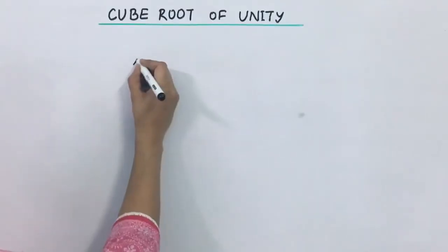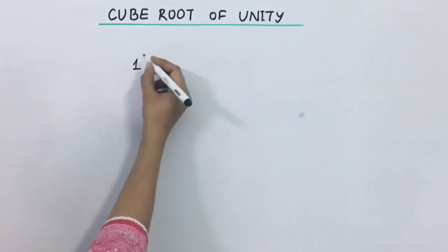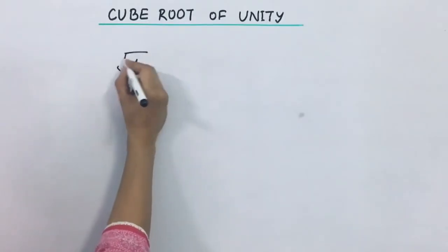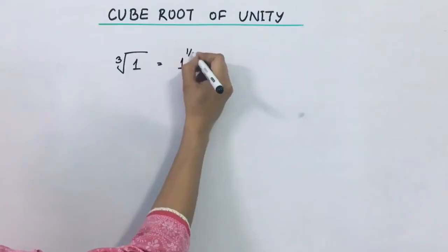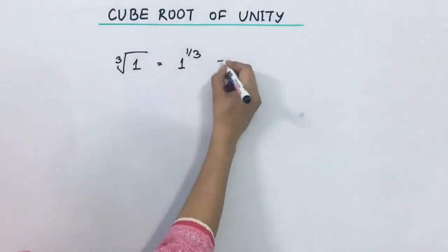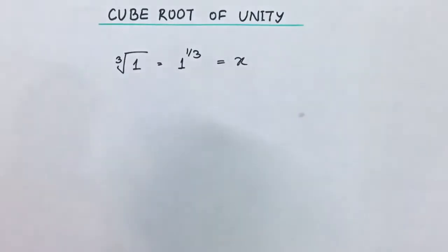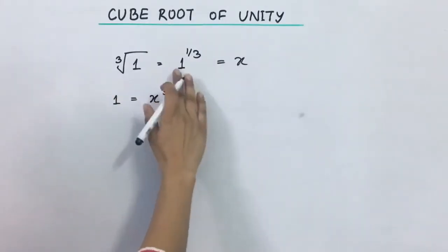After square root comes cube root of unity. Now what is the meaning of unity? The number 1 is unity and we have to find its cube roots. It can be written as 1 raised to power 1 by 3. Let us say this value is equal to x. Taking cube on both the sides we get 1 equals x cube.